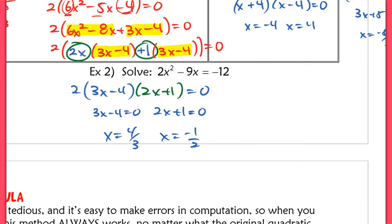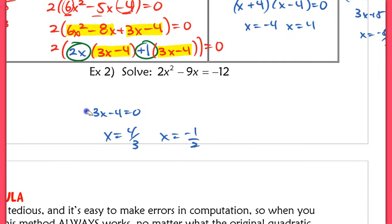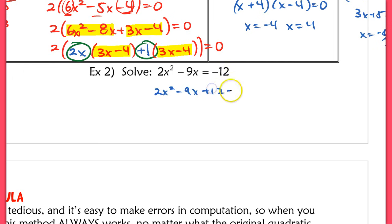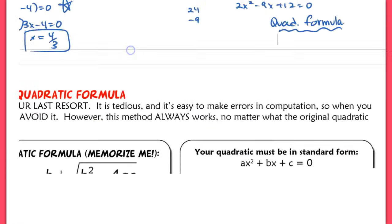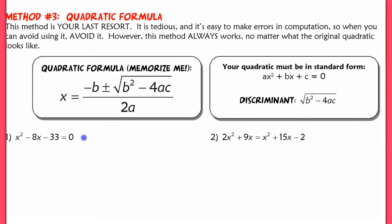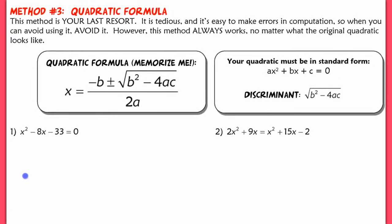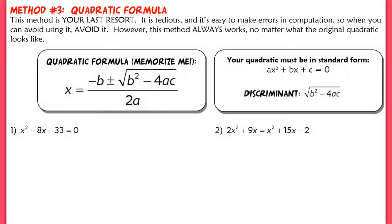Example 2 — I purposely put a question on here that ends up being not factorable. If we move that 12 over, we end up trying to find two numbers that multiply to 24 and add up to negative 9, and there are no two numbers that do this. So in this case, we have to use the quadratic formula — this is your last resort. A lot of you like it, but you usually make tiny mistakes that give you crazy solutions. This is something you need to memorize.